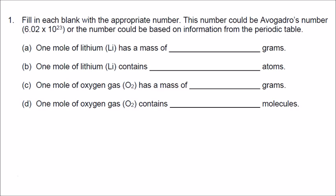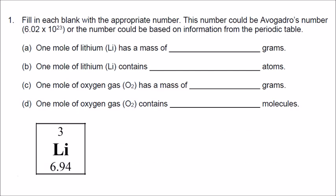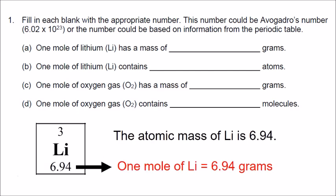Part A: one mole of lithium has a mass of how many grams? If we want to find the mass of one mole of a substance, we use the periodic table and the atomic mass. On the periodic table, lithium has an atomic mass of 6.94. So therefore, one mole of lithium has a mass of 6.94 grams.